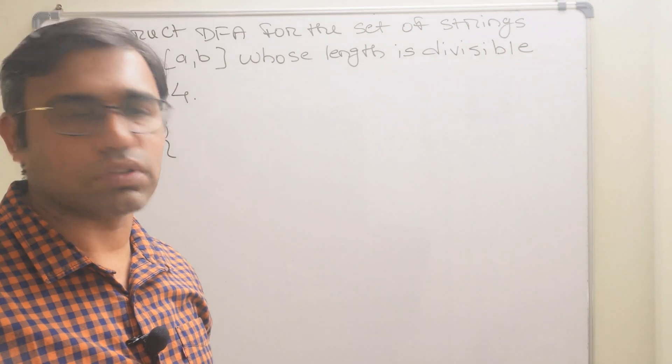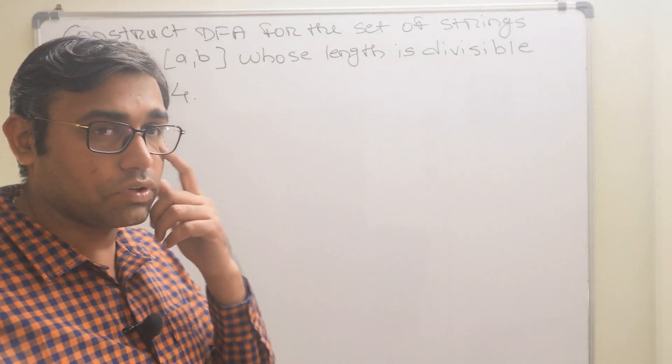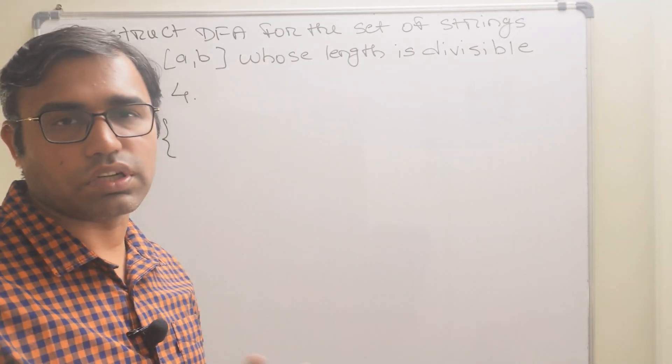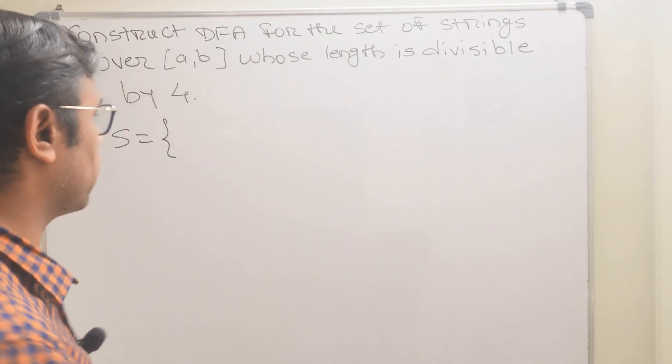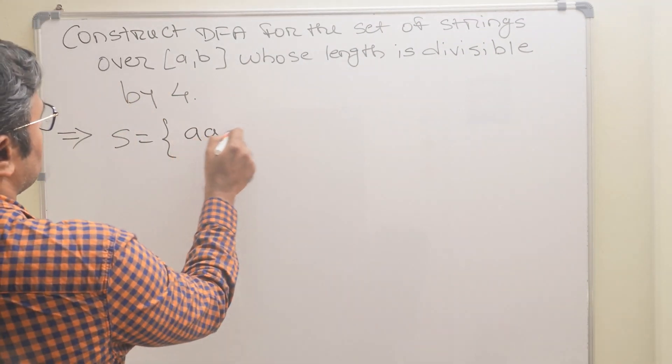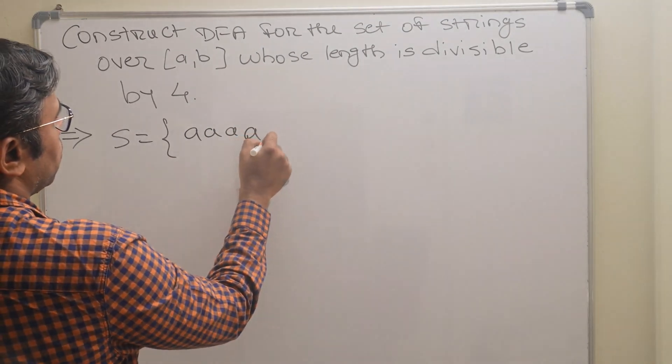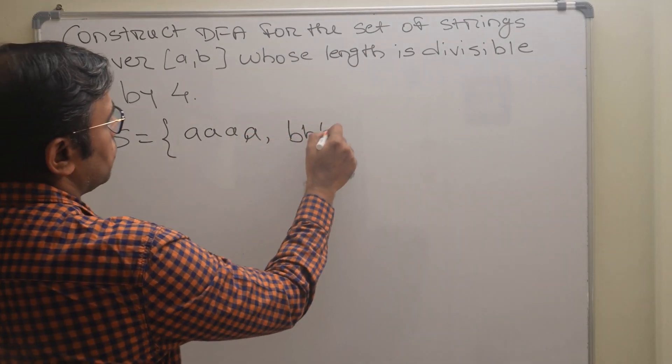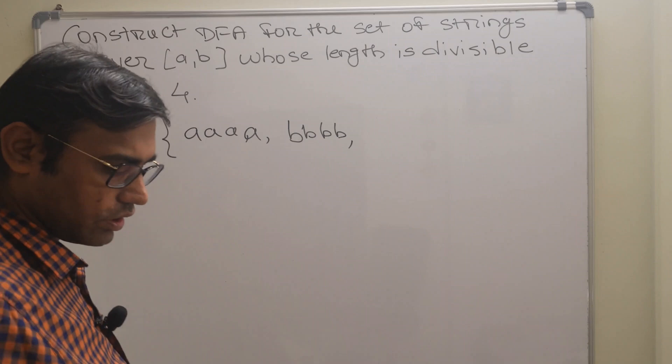So first of all we will write the valid values, what are the valid values in the set, and then we will try to construct the deterministic finite automata. Valid values can be four times a, then four times b.